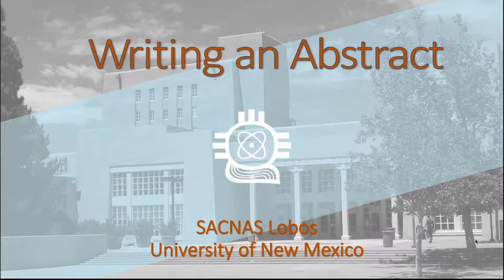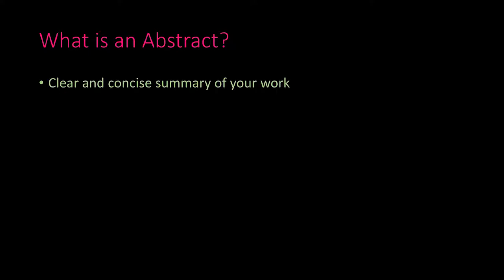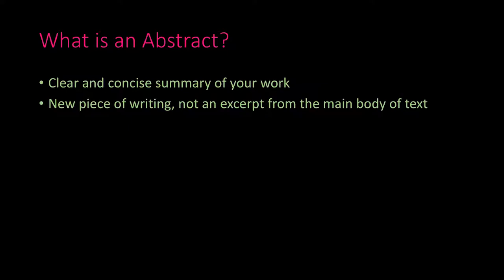The first thing we'll go over is: what is an abstract? An abstract is generally a summary of your project — a very straightforward, to-the-point, short paragraph describing your project. This is often a brand new piece of writing. Even if you have existing writing on your project, you write the abstract fresh — you don't copy and paste from what you already have. However, it is a good idea to use your main body of text to organize your abstract.